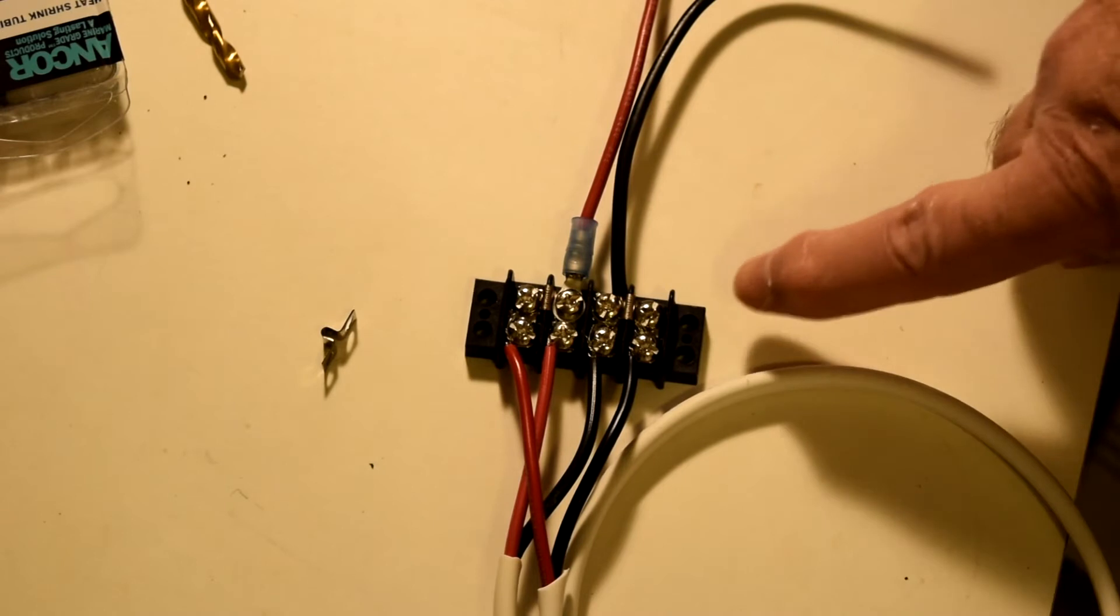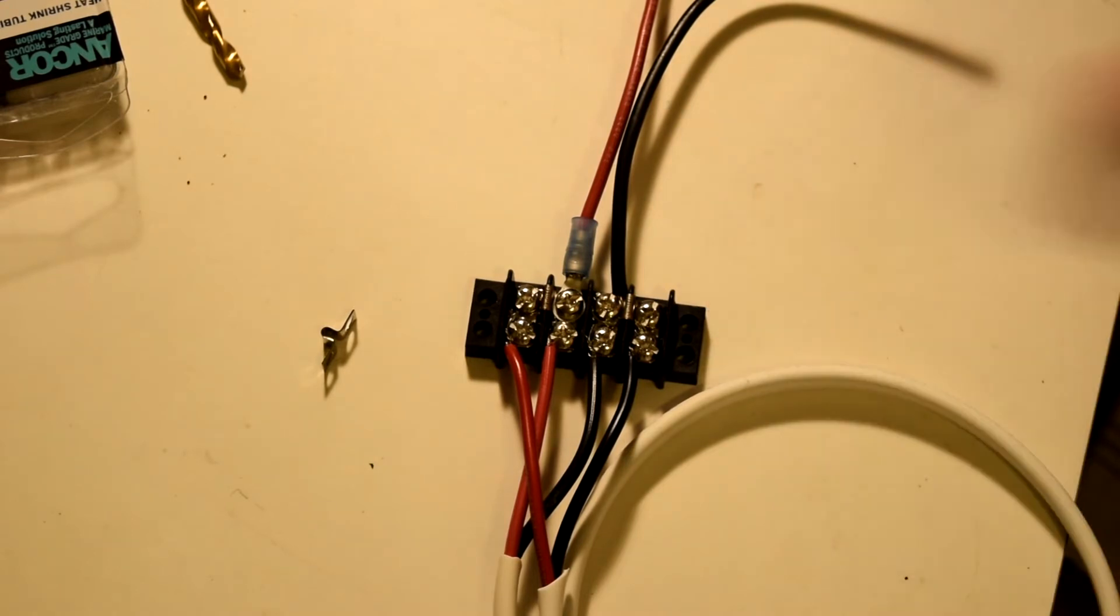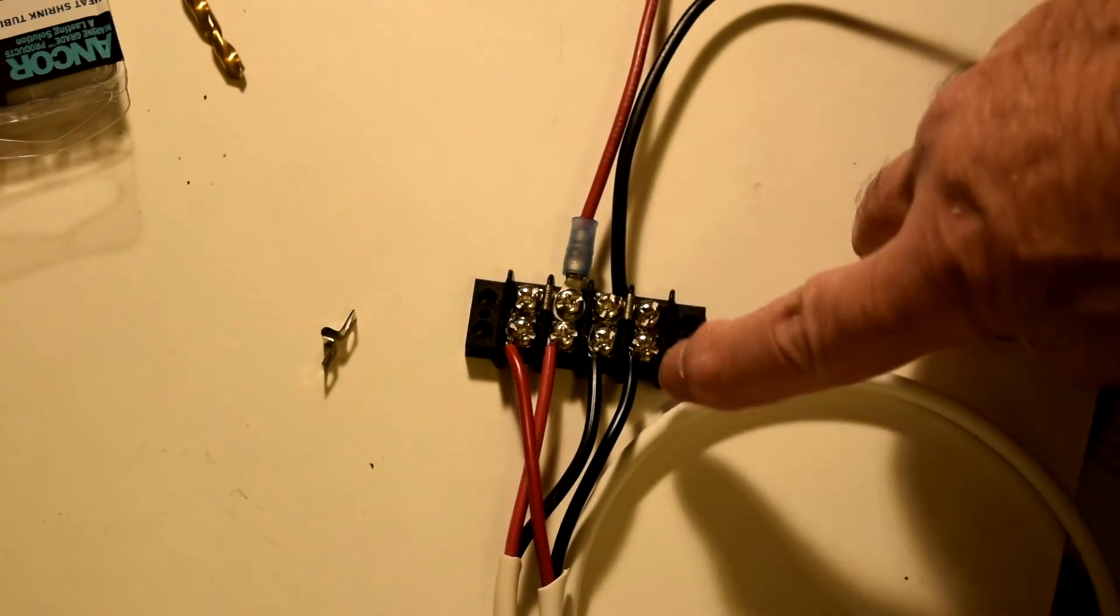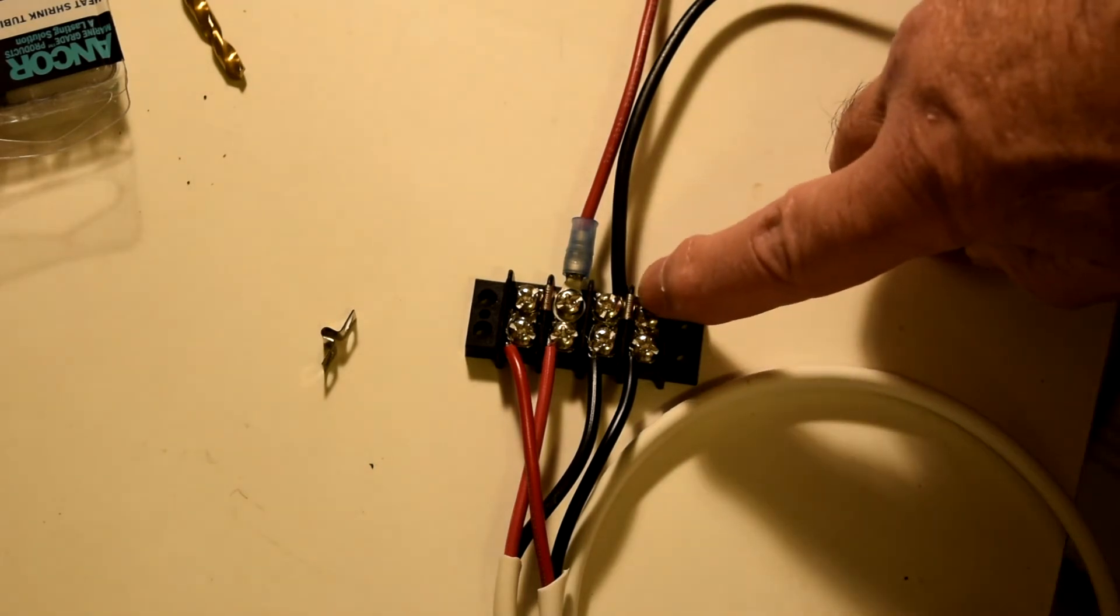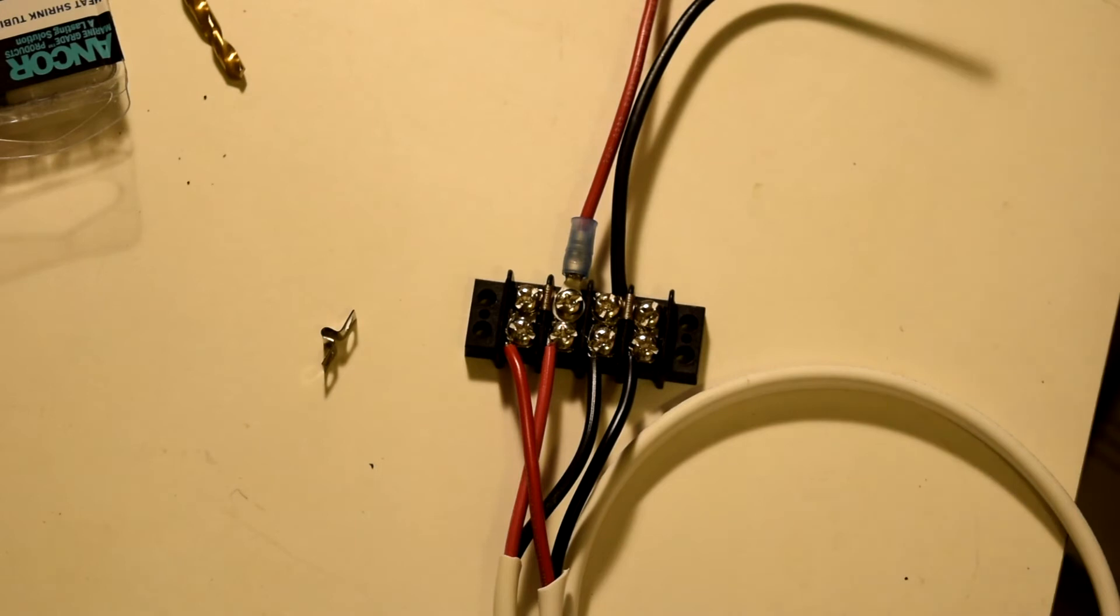What I have here is this little black thing with the screws in it is called a barrier terminal strip and the screws on either side, this one and this one, are electrically connected. So if I connect a wire to this screw and a wire to this screw, they're electrically connected.